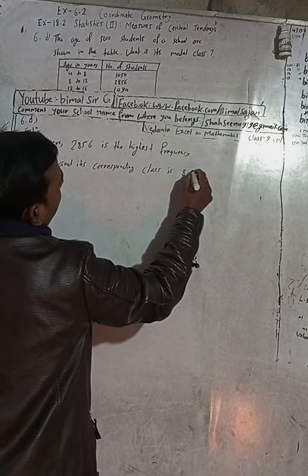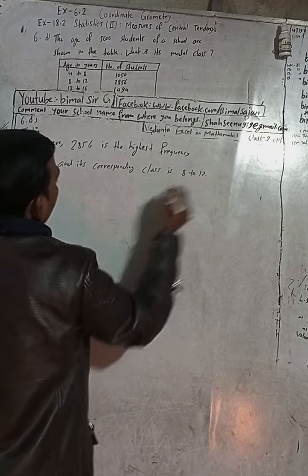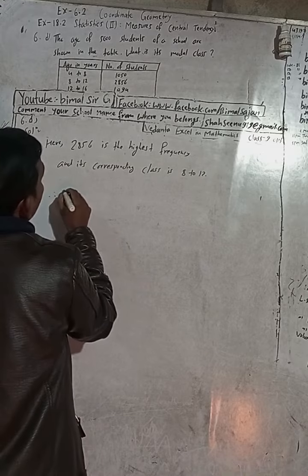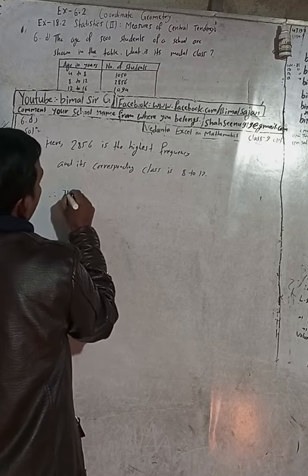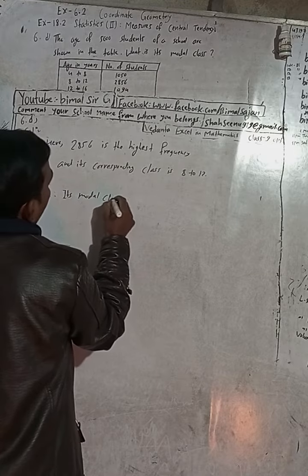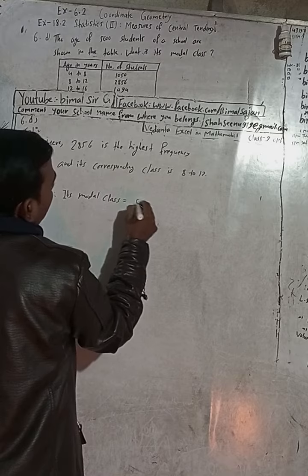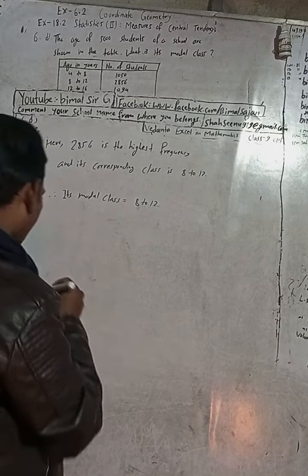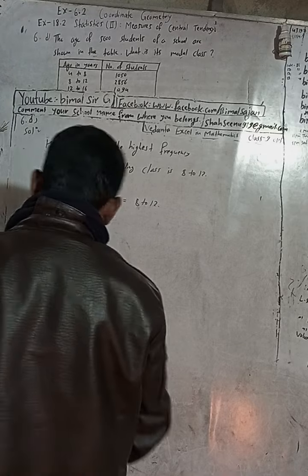Therefore, the modal class is 8 to 12. So the answer is: modal class equals 8 to 12.